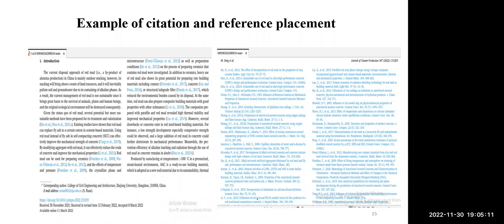Now I will show where we need to use the citation and references. This is an introduction part — within the introduction part, we are using this citation; this reference within the text is called citation. Not only in the introduction part — if you use any reference from the introduction up to results and discussion, that is called a citation. If you use it at the end of the research article, that is a reference. I think you got the clarity on the difference between citation and references.